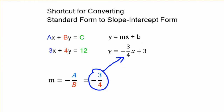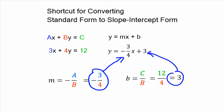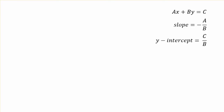To find b, your y-intercept, all you have to do is take c and put it over b. We just take 12 over 4 — 12 divided by 4 is 3. That's the whole shortcut: just remember negative a over b for the slope, and c over b for the y-intercept. It's really quick. We've got our shortcuts here to the side to refer to — just something quick to memorize.